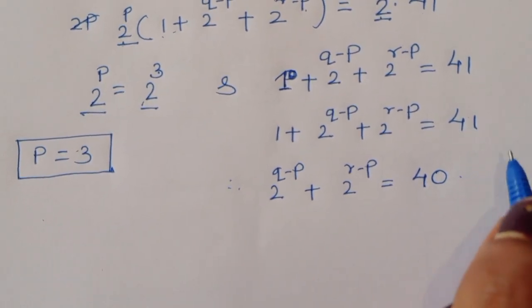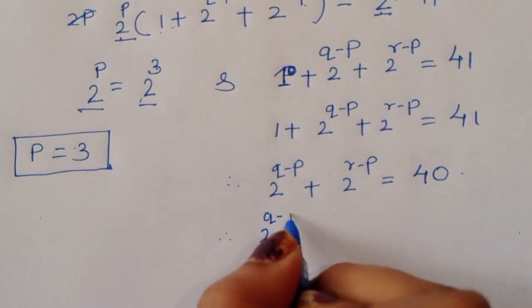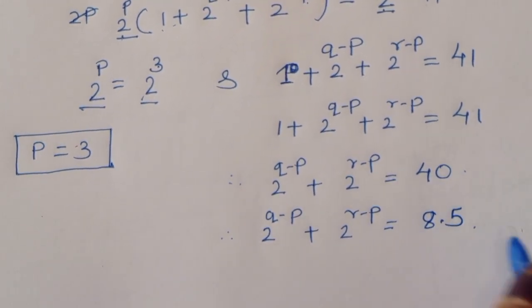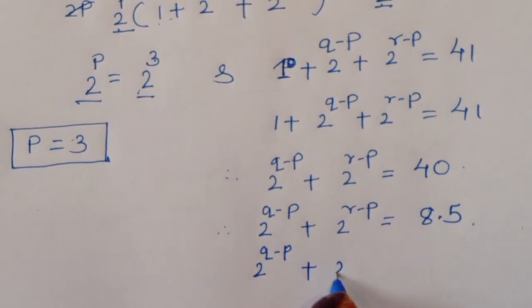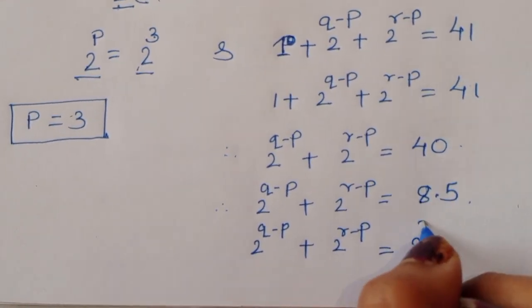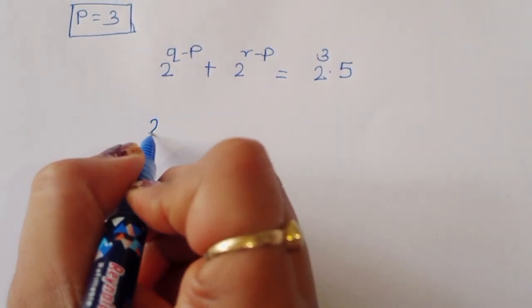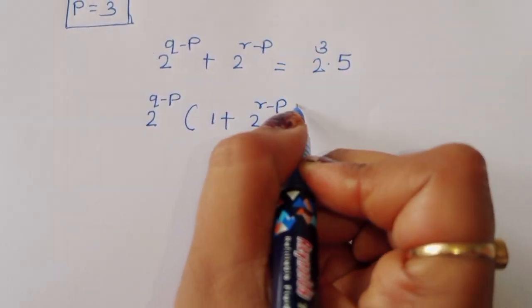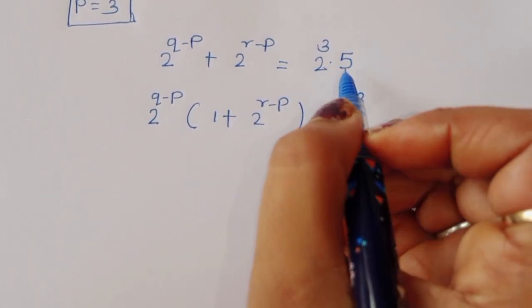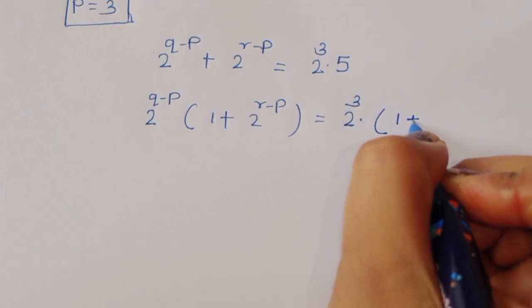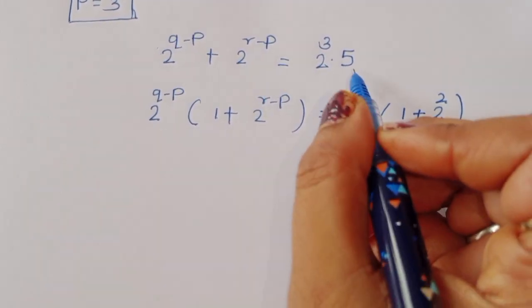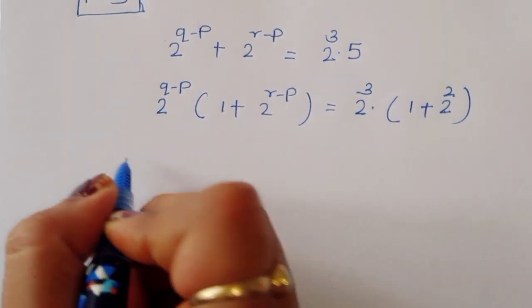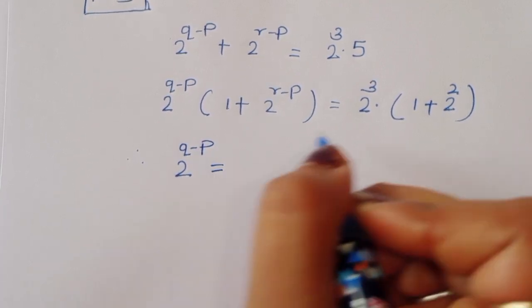Now, 40 can be written as 2 power 3 times 5. Taking 2 power Q minus P common, we get 2 power Q minus P times (1 plus 2 power R minus Q) equals 2 power 3 times 5. We can write 5 as 1 plus 2 squared, that is 1 plus 4. Comparing both terms, 2 power Q minus P equals 2 power 3.